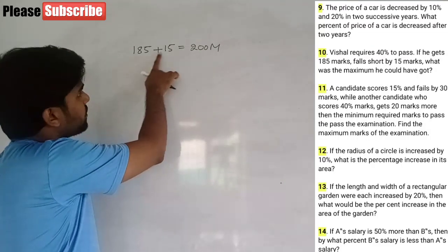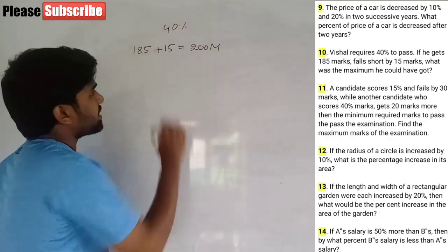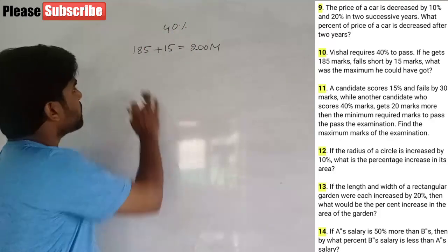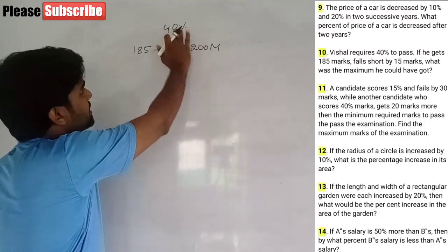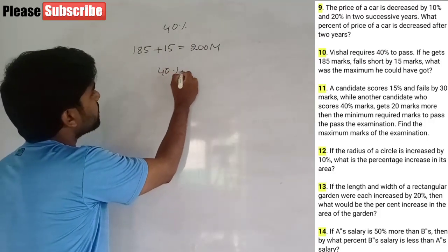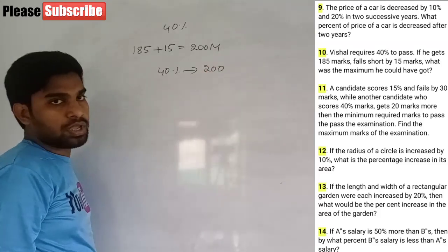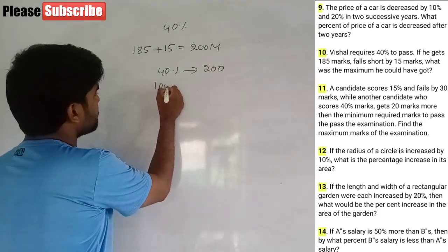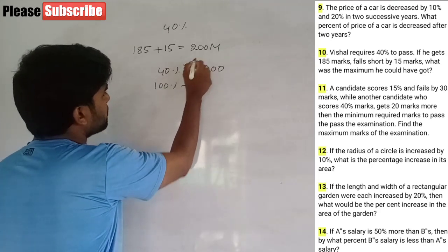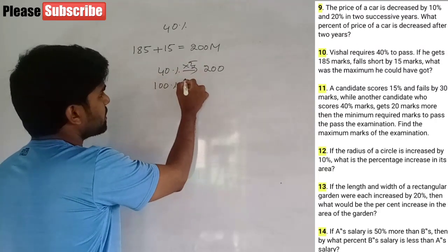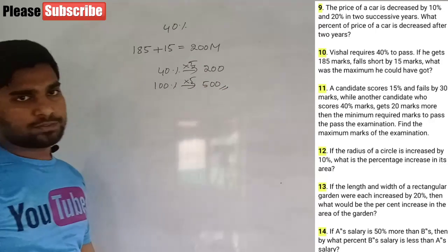To pass requires 185 marks plus 15 marks, totaling 200 marks. Pass percentage is 40%, so 40% equals 200. Therefore maximum marks equal 100%, and multiplying: 5 into 200 divided by 2 gives 500 maximum marks.